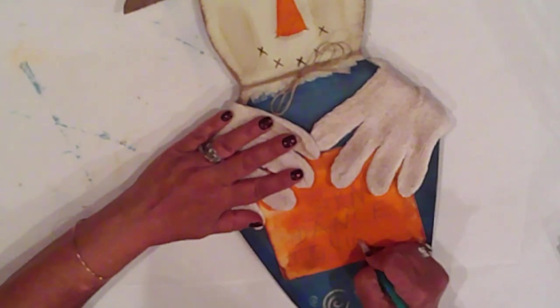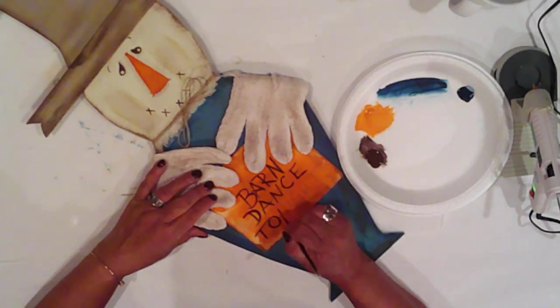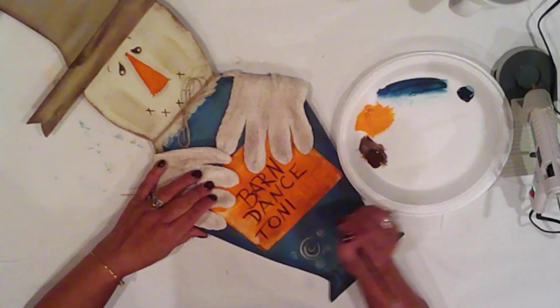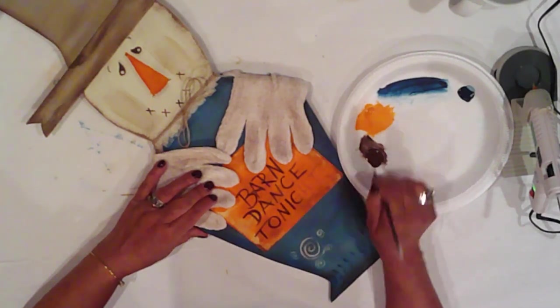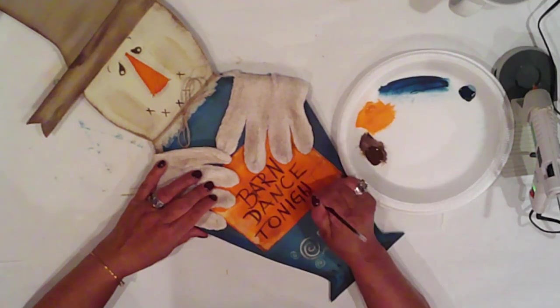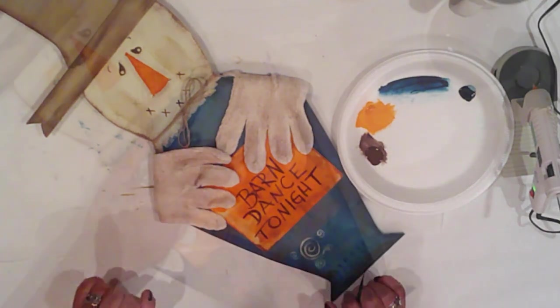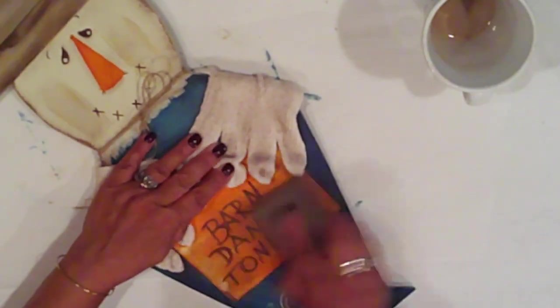I've penciled in 'Born to Dance Tonight' onto his sign, and I'll paint it in with Burnt Umber. Then I lightly sand it.